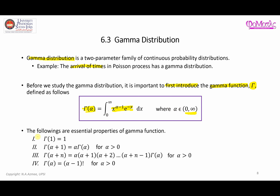Here are the four essential properties of the gamma function. For example, gamma of one equals one. When you have gamma of alpha plus one, this is equal to alpha times gamma of alpha. These are all the important properties, and in this video we are going to look at all of them.